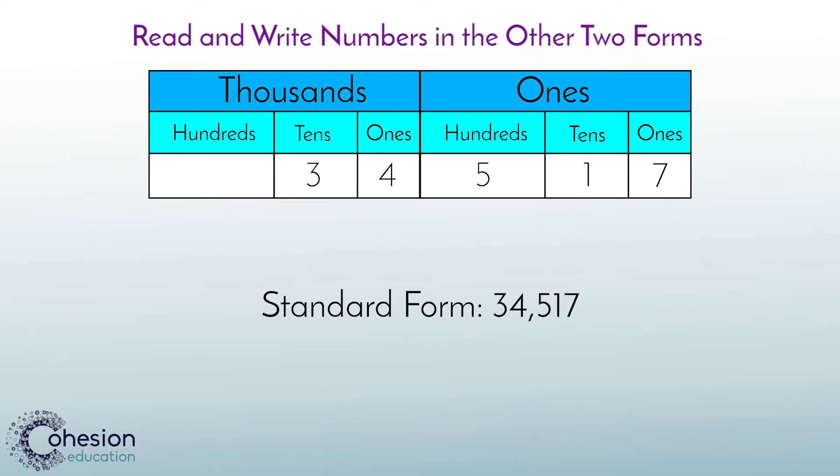34,517 would be 30,000 plus 4,000 plus 500 plus 10 plus 7.